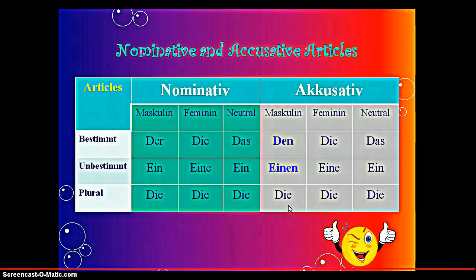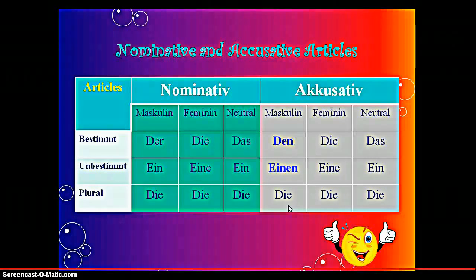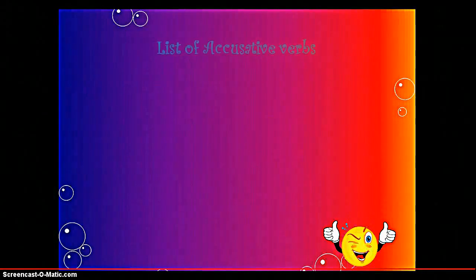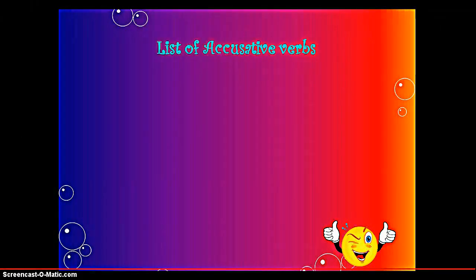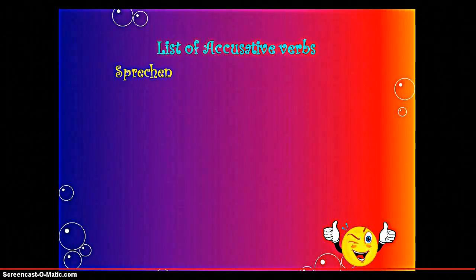I hope I have been successful in explaining the concept of Nominative and Accusative sentences. I will later upload a video on the usage of these articles. Let us now discuss the list of Accusative verbs. What are the Accusative verbs? Sprechen, which means to speak — because it is an action, it is considered an Accusative verb.